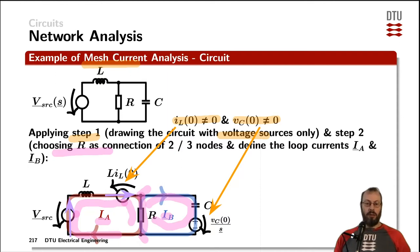which is the voltage L times the initial current of that inductor. Furthermore, the impedances we are meeting, Ia is flowing through the impedance sL of the inductor. And then we have Ia minus Ib flowing through the resistor. And that was all for the loop A.